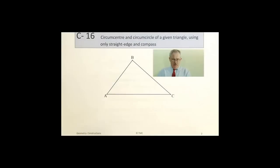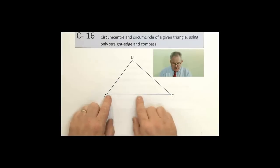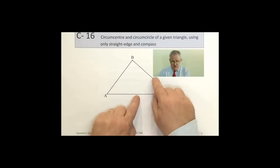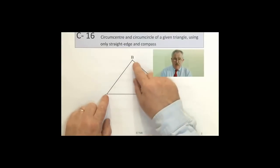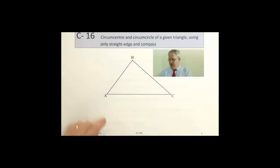So how do we find that? Well, the method is done by actually calculating the midpoint of any two of the three lines. So I'm going to take the line AB and find its midpoint. And to do that, I'm going to bisect the line, and I do that with a compass as follows.